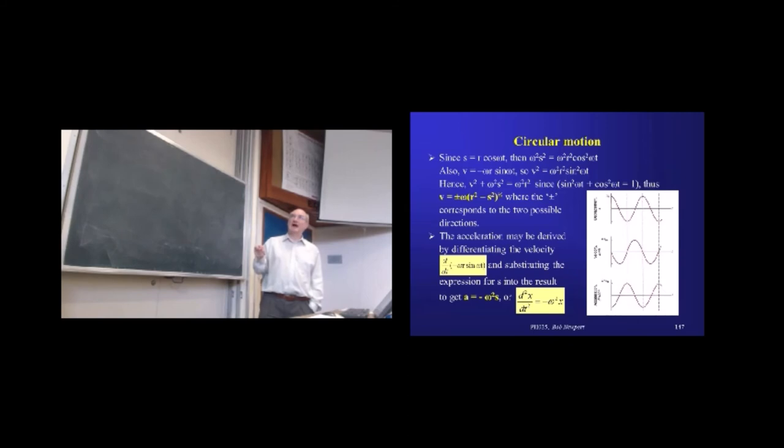So, if I then add these two together and take out common factors, that's the reason I put the ω squared in up here, I get a sine squared plus a cosine squared, which is just one. So, I end up with a very simple relationship then between the velocity and displacement and r.